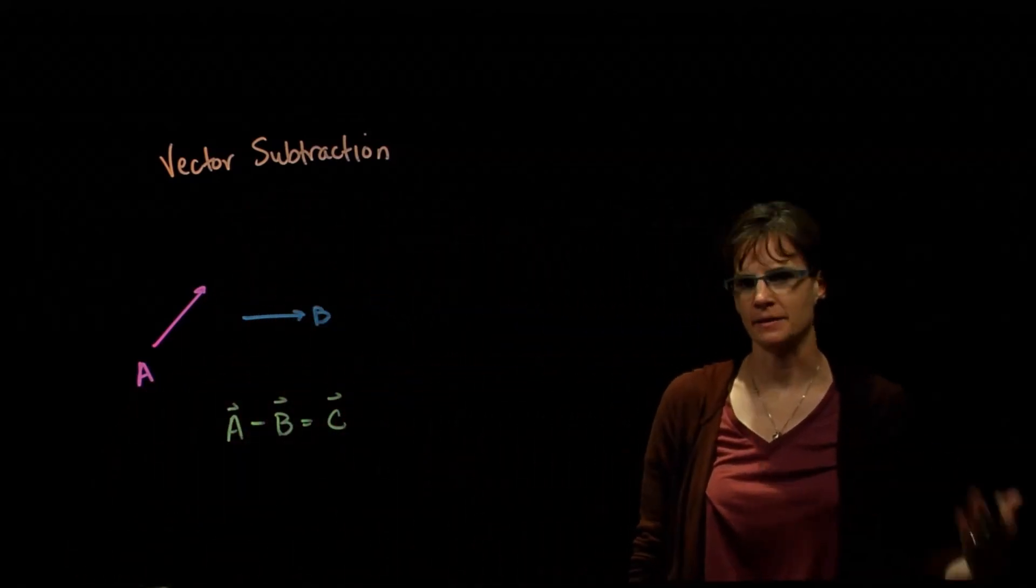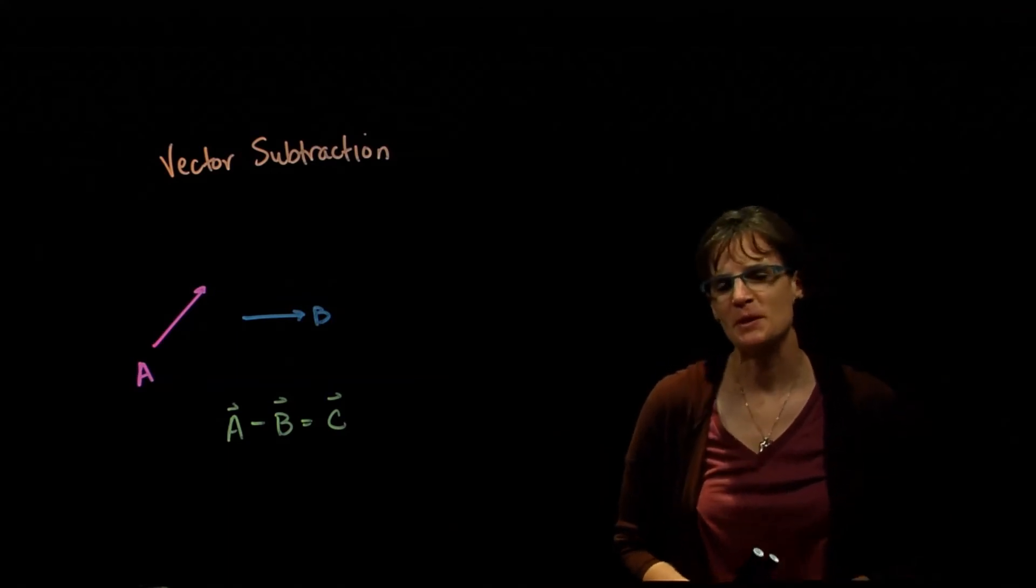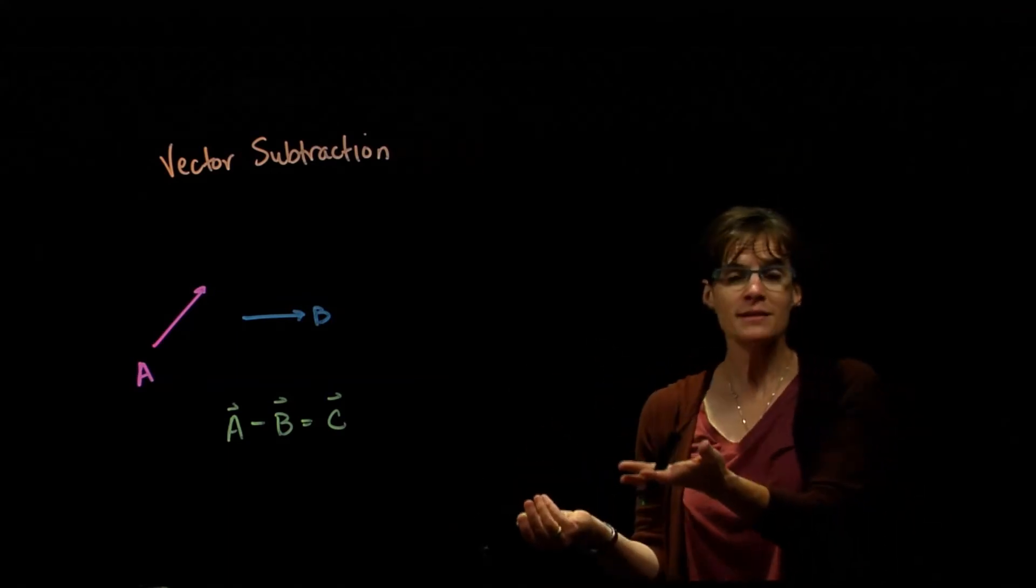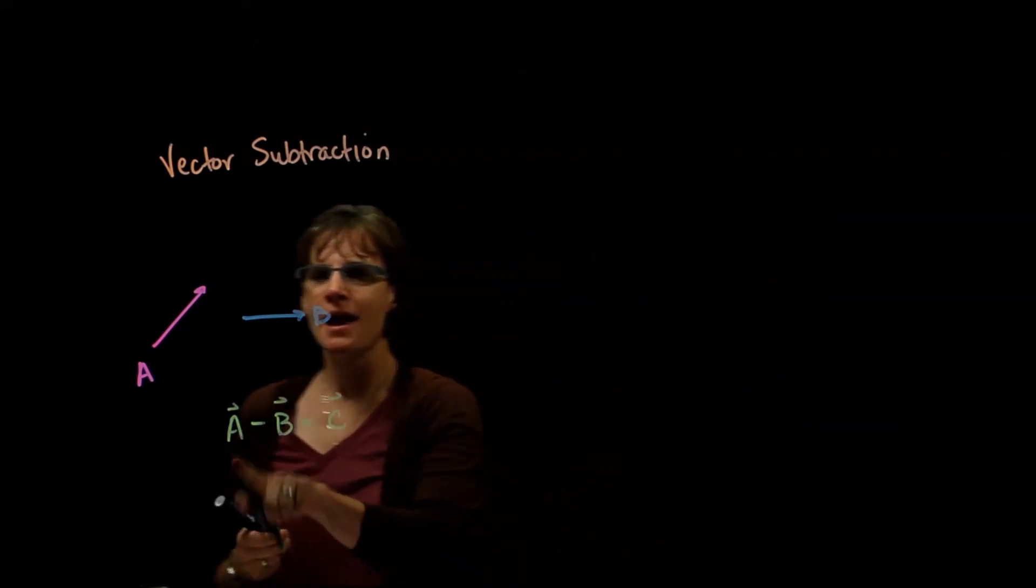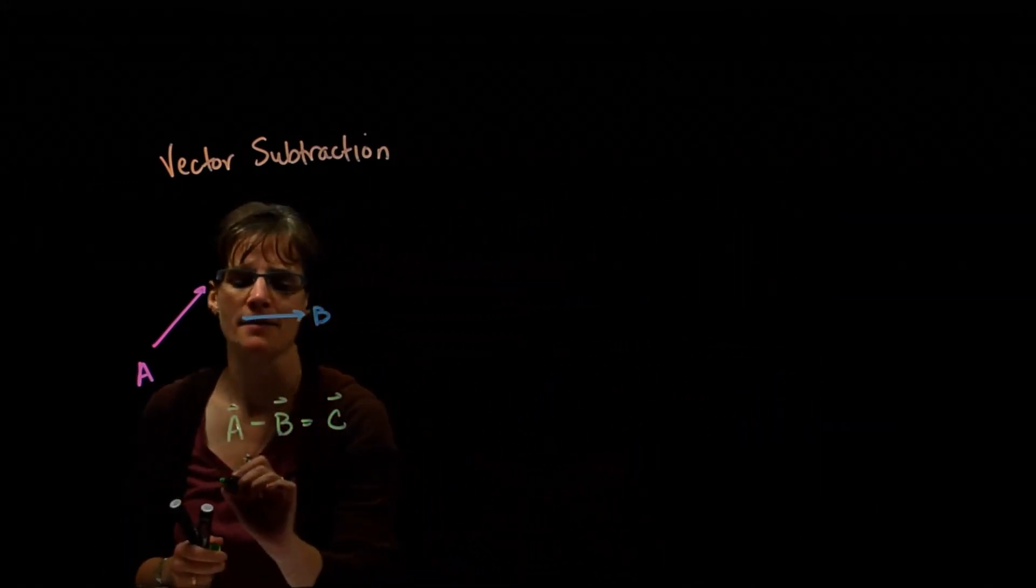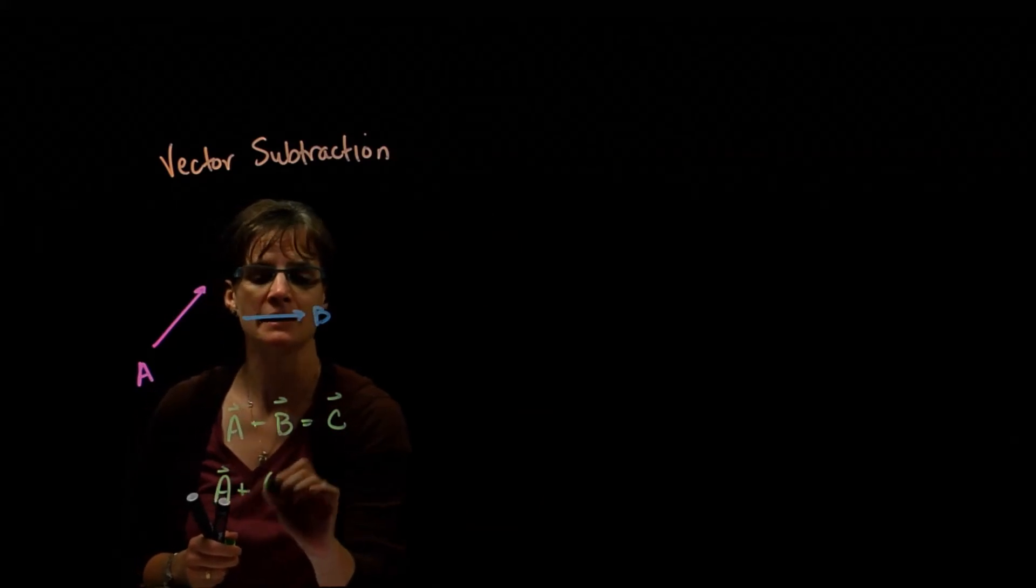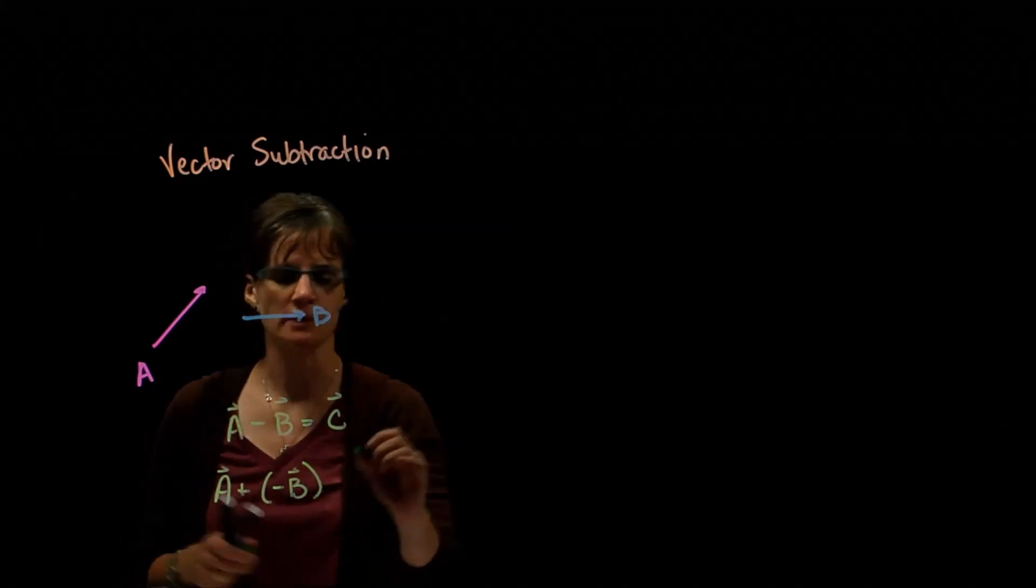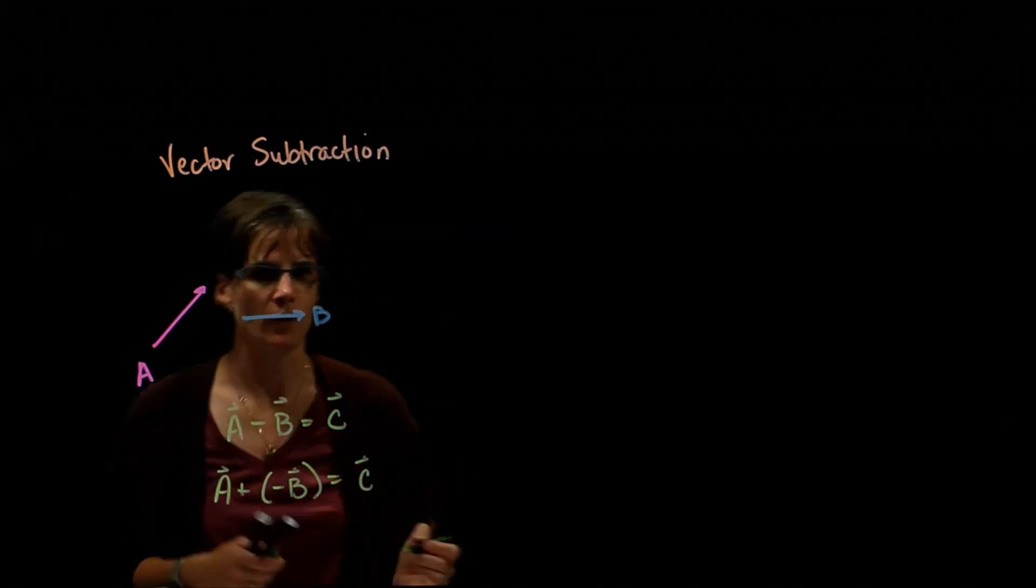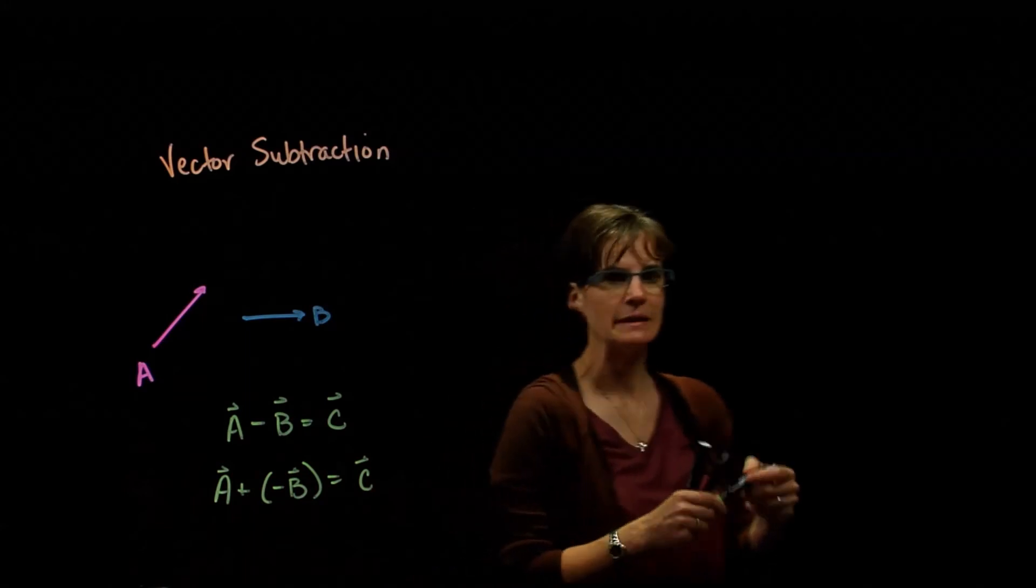So how do I get A minus B? It's going to be useful to remember some of our truths about things like addition and subtraction. A minus B is the same as A plus negative vector B. Those are identical. So that also will equal the resultant vector C.